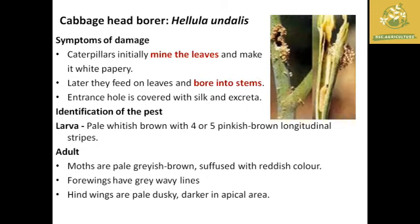The next pest is the cabbage head borer, scientific name Hellula undalis. Symptoms of damage include mining of the leaves, leaving a whitish papery appearance. The larva later feeds on the leaves, bores into the stem, and makes entrance holes covered with silk and excreta produced by these insects.